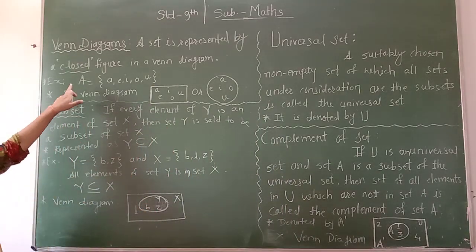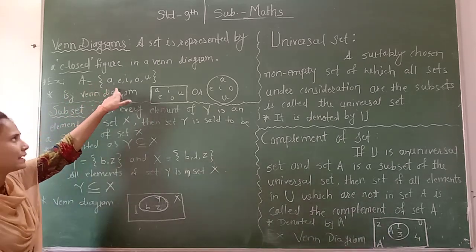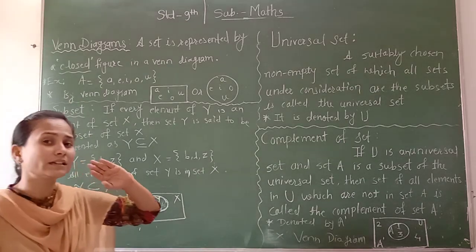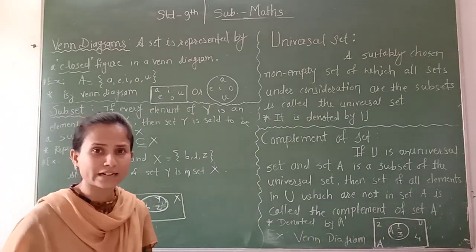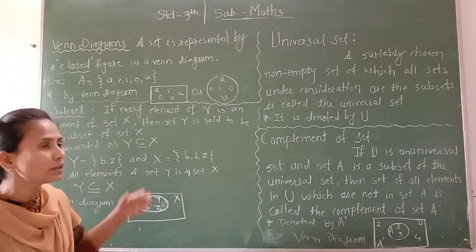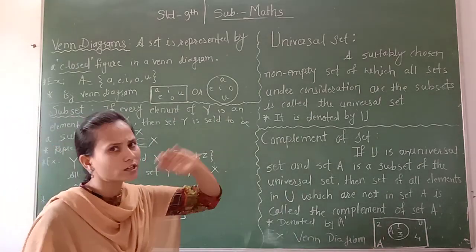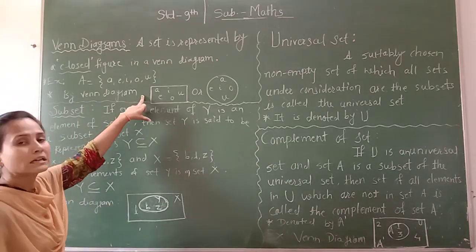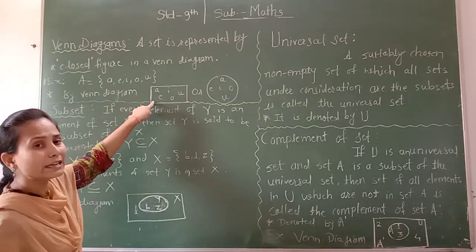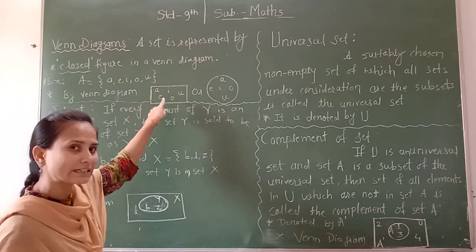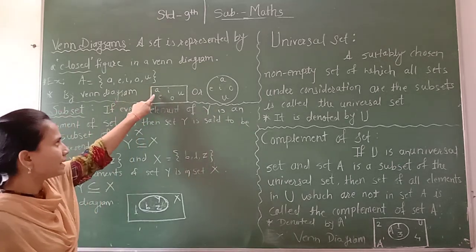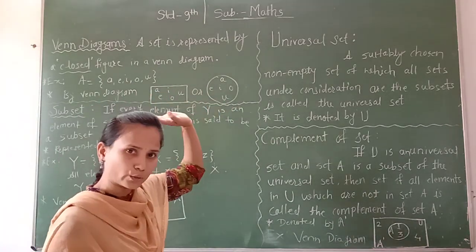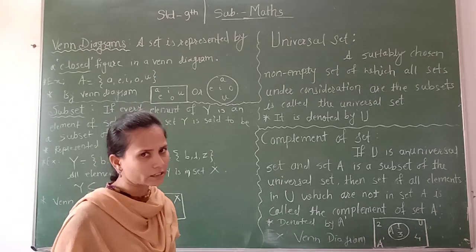Any figure you can use to represent the Venn diagram. For example, A = {a, e, i, o, u}. This is the listing method. To represent this by a Venn diagram, you can use a rectangle and write each and every element inside that figure: a, e, i, o, u. Or you can use a circle with a, e, i, o, u. Or you can use a triangle or other figure.